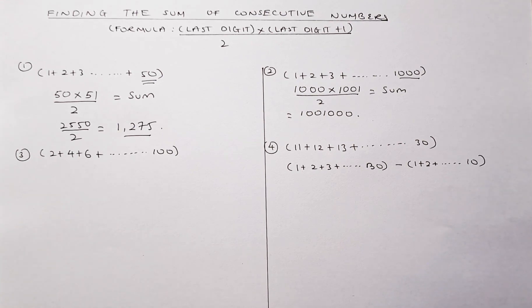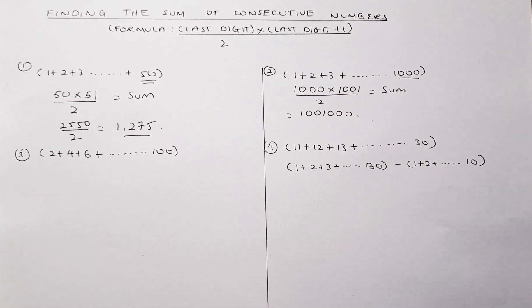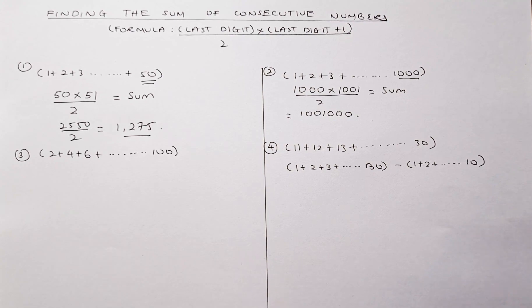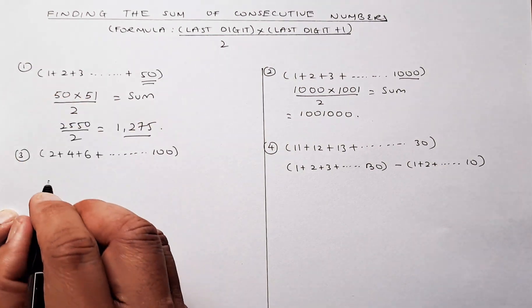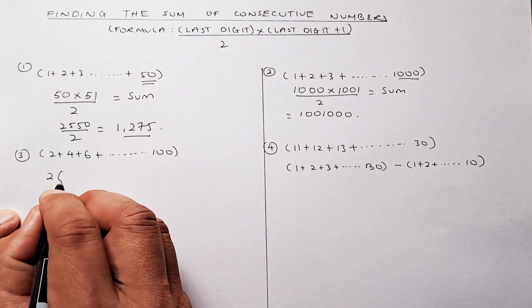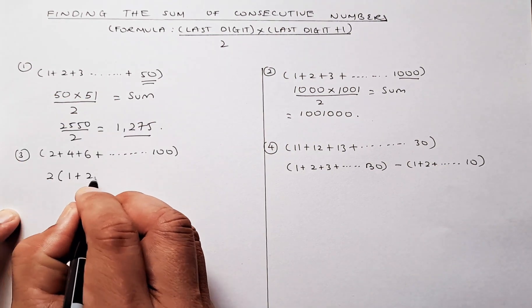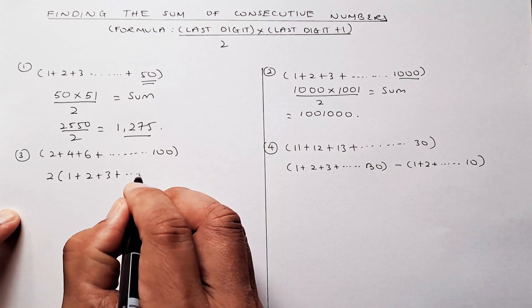So now we're going to do a modification of the question in example 3. You have 2, 4, 6, 8 and all the way up to 100. So how you do it? This is actually a simplified version of the first example. So what you do, you take the 2 out and this is the same as 1 plus 2 plus 3 plus all the way to 50.